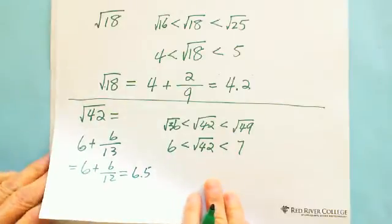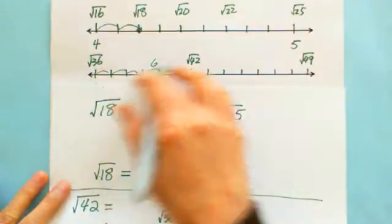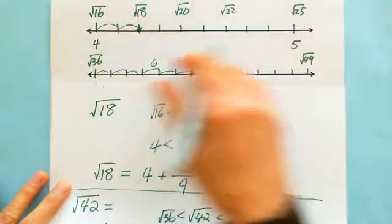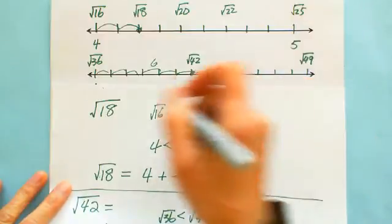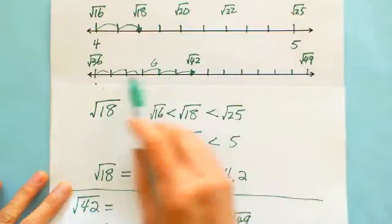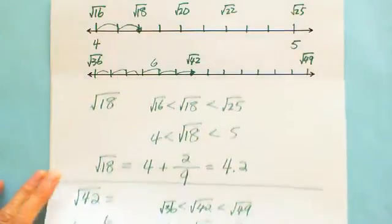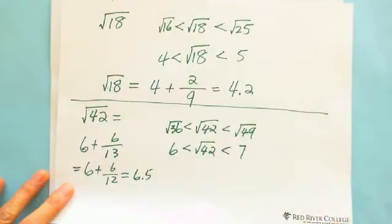And after this one, actually, now we know that the way, the strategy, we don't need every time draw a number line. It takes time. Which is no. From 36 to 49, only total is 13 number, and from 36 to 42 is 6, which is 6 over 13. So, that's why the next I show you the easier way, just directly, without using the number line.